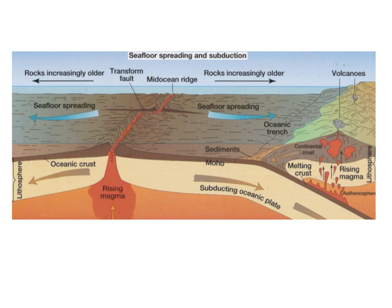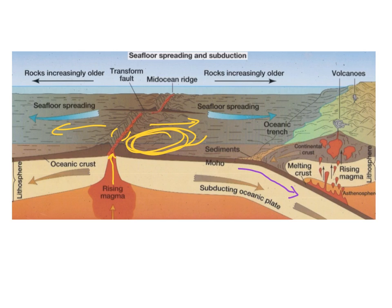New oceanic crust forms at regions of seafloor spreading. This is where two plates move away from each other at a divergent boundary, allowing magma to rise up and form new crust material — this is how we make new ocean floor. Since the Earth isn't getting bigger, that plate moving away must ultimately be subducted somewhere, where it melts away and causes volcanic activity. This is how the Earth maintains its size while continuously generating new seafloor.